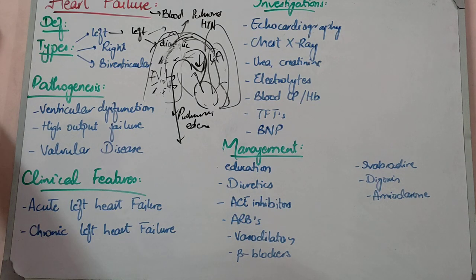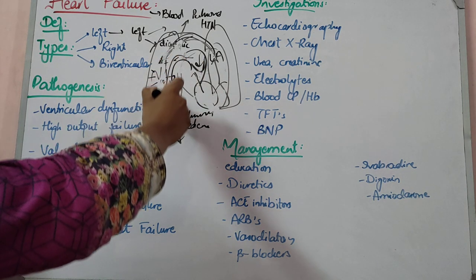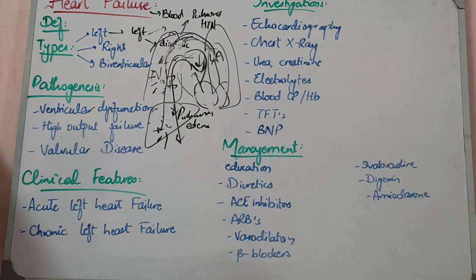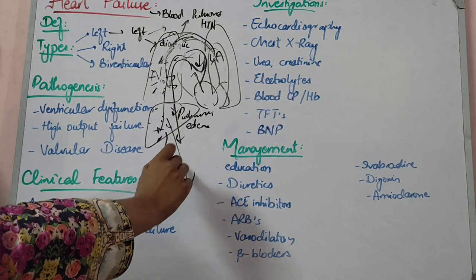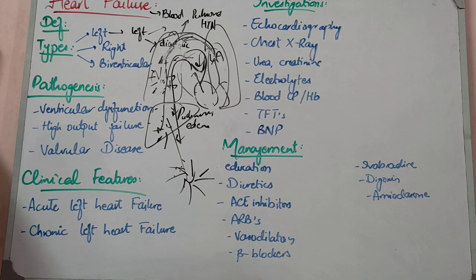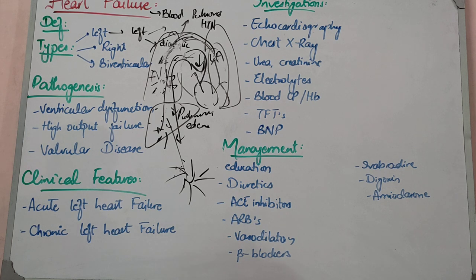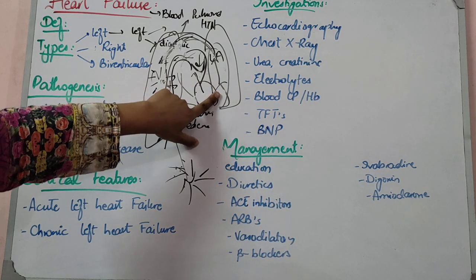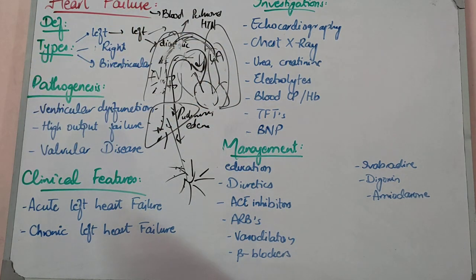In right heart failure, back pressure accumulates in the systemic venous circulation. Blood backs up into the liver causing hepatomegaly, and peripheral edema develops — ankle edema and sacral edema — because backflow increases in the systemic circulation. Right heart failure can also be caused by primary pulmonary hypertension, pneumonia, or other lung diseases that increase pressure in the pulmonary circulation.